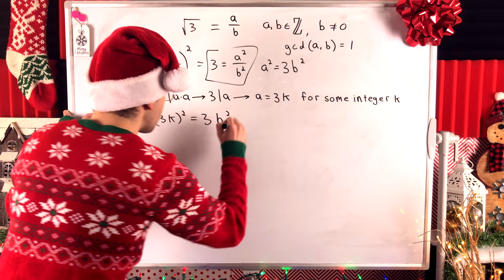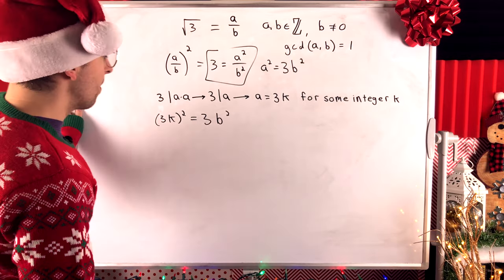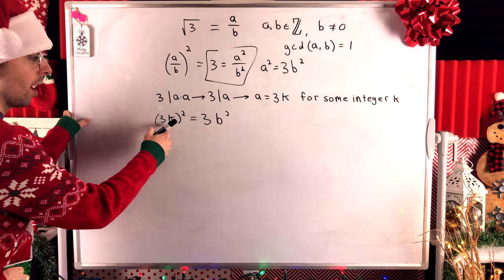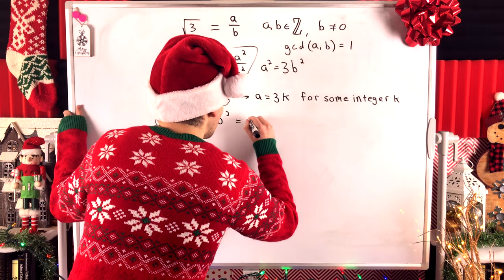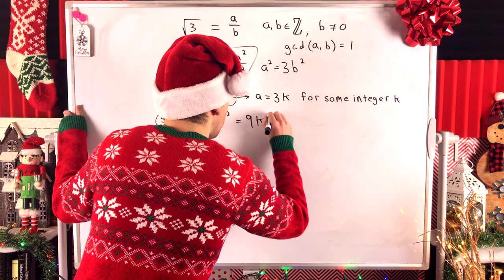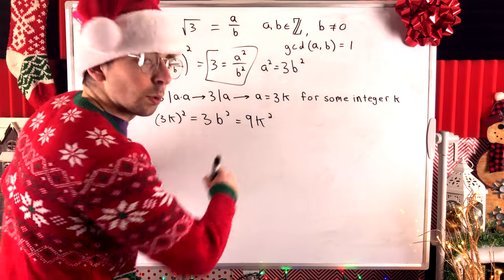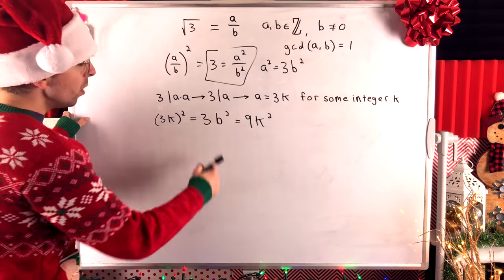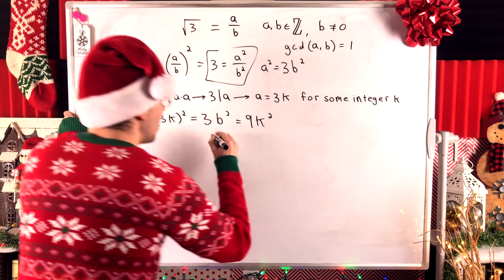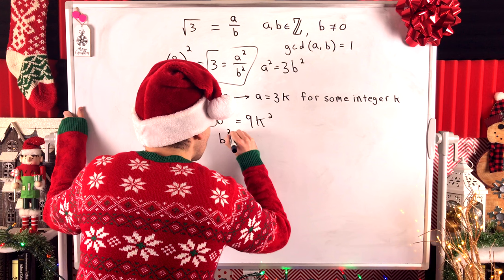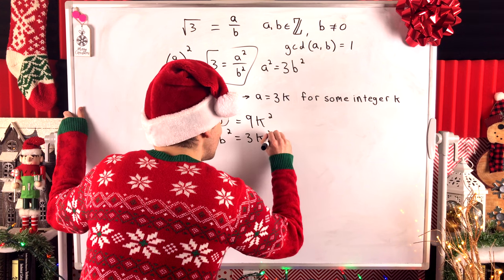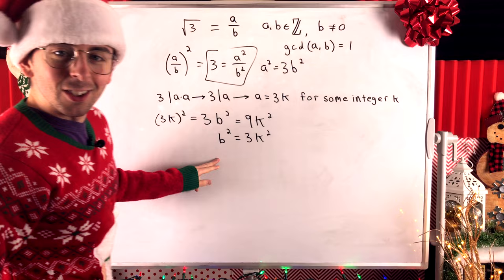And then, what do we get if we square 3K? Well, that would be 3 squared times K squared. That's 9K squared. So, 3B squared equals 9K squared. We could divide both sides of this equation by 3, which would give us that B squared is equal to 3K squared. And then, look.